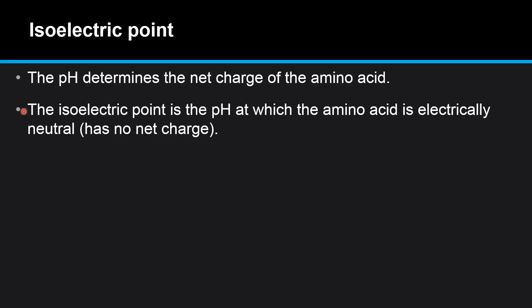Next we look at the isoelectric point. The pH determines the net charge of the amino acid. The isoelectric point is the pH at which the amino acid is electrically neutral. That means it has no net charge.